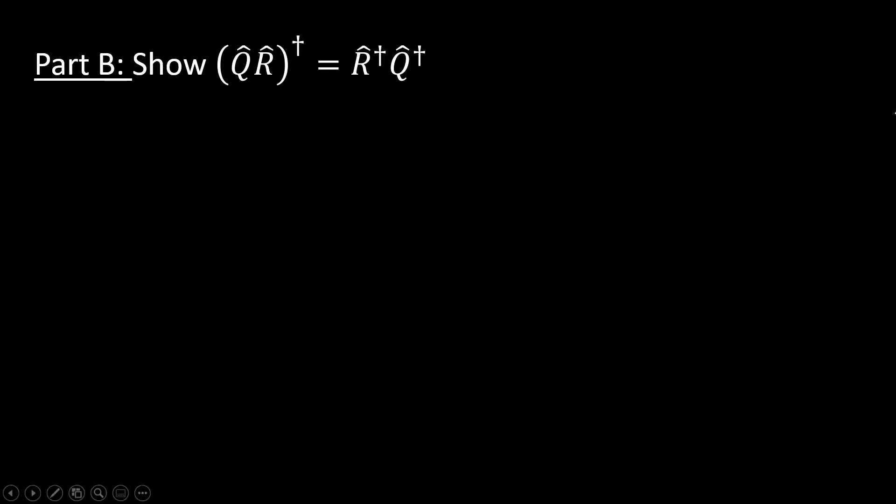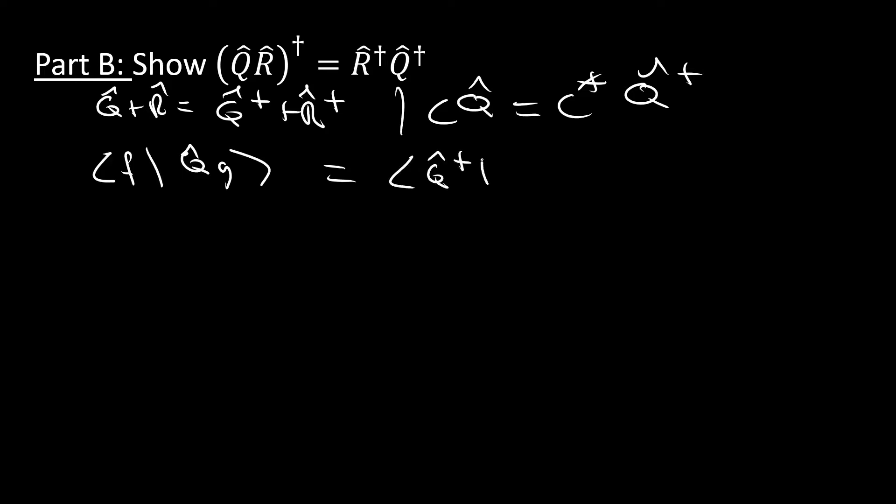All right. In part B, we want to show the following here. And we're given two things that could really help us out. We're given that q hat plus r hat dagger equals q hat dagger plus r hat dagger. We're also given that some constant times q hat is equal to the complex conjugate of that constant times the Hermitian conjugate of q hat. And we need to recall that with Hermitians, we'd expect the following: bra f ket q hat g is equal to bra q hat dagger f ket g.